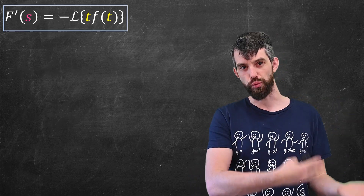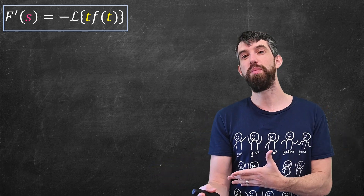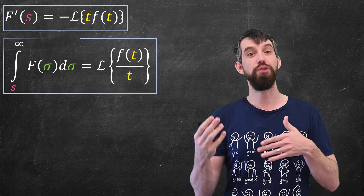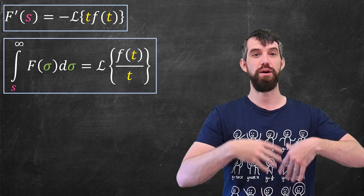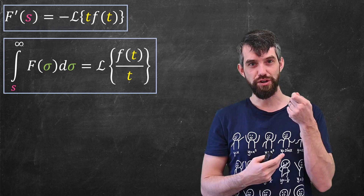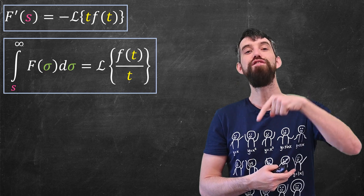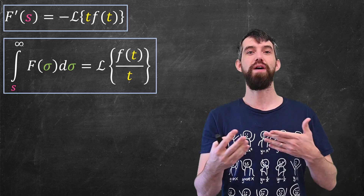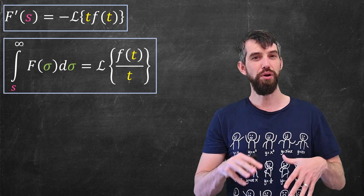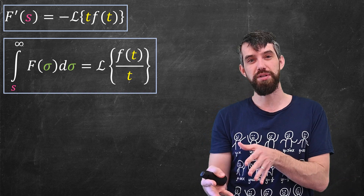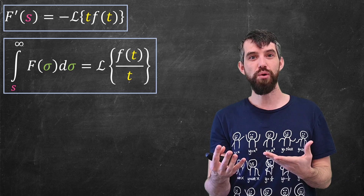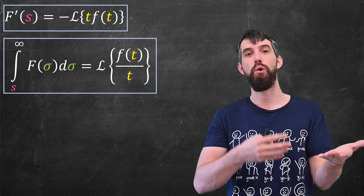So far in this video we've talked about taking the derivative of the Laplace transform. The final thing is going the other way: taking the integral of the Laplace transform. The formula is: the integral from s up to infinity of capital F(σ) dσ equals the Laplace transform of f(t)/t. Similarly, if you divide by a higher power of t like t² or t³, you take multiple integrals. So if you know the Laplace transform of f(t), multiplying by powers of t on top corresponds to derivatives, while dividing by powers of t corresponds to integrals of the Laplace transform.